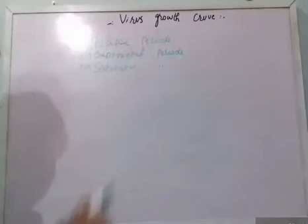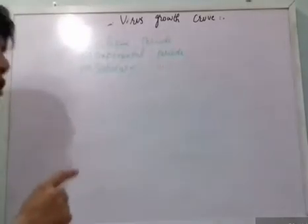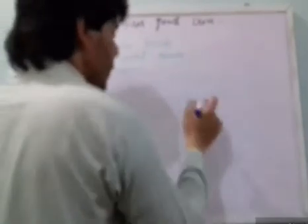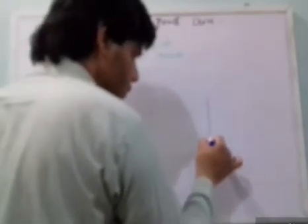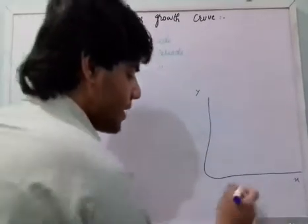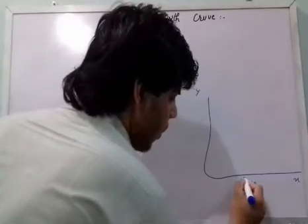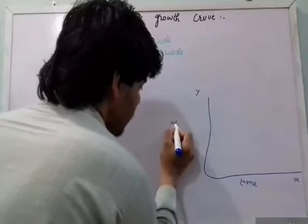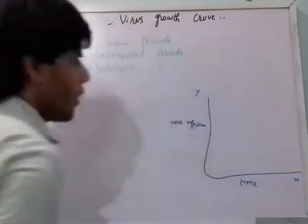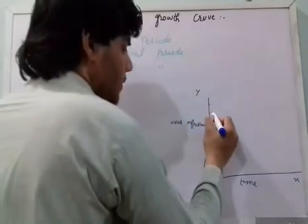To explain these three periods, you need to understand the graph. Let me draw a graph for your understanding. Whenever you are dealing with the virus growth curve, you need to understand this graph. The x-axis represents time, and the y-axis represents virus infection.